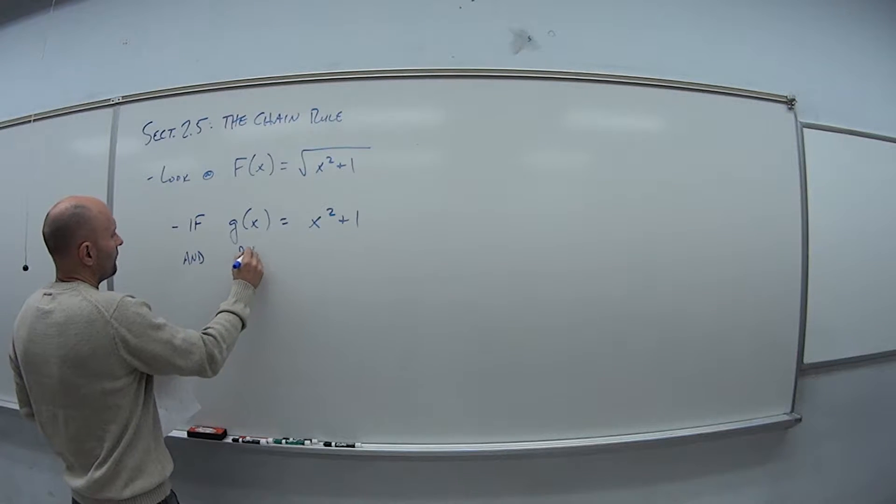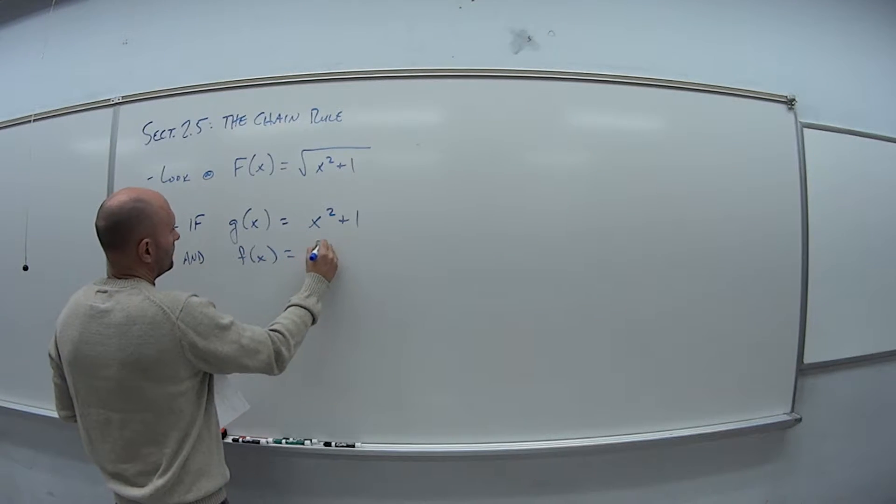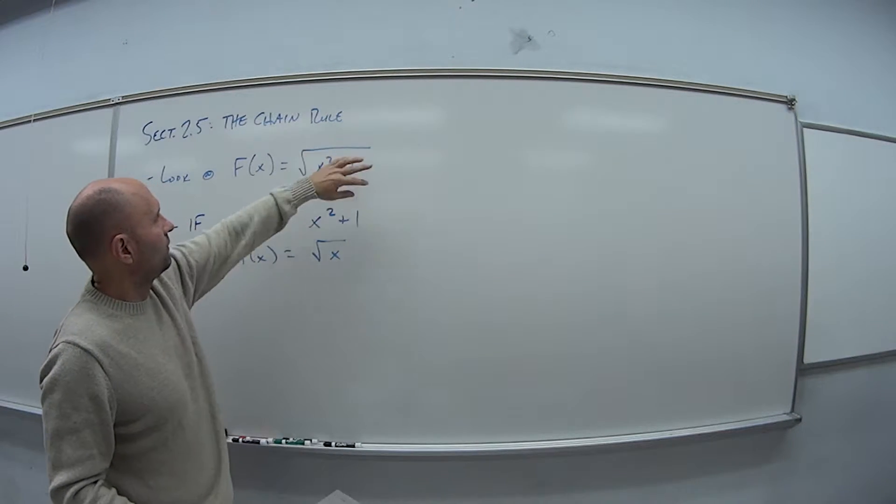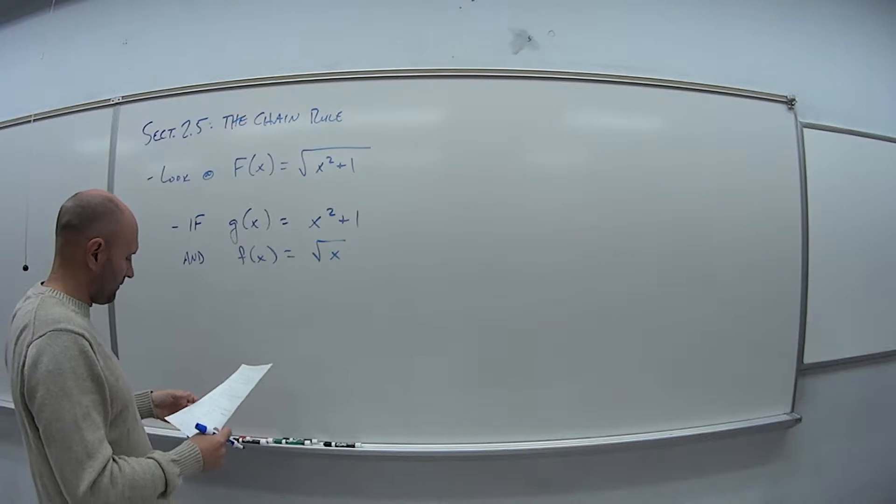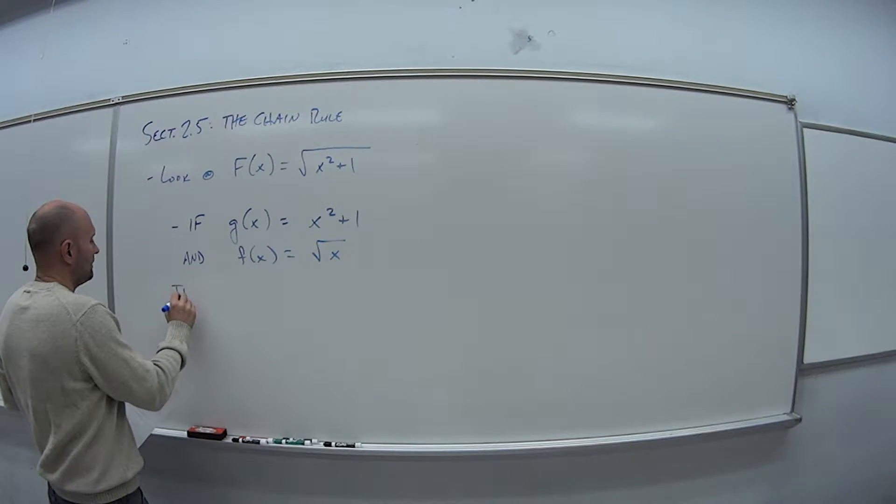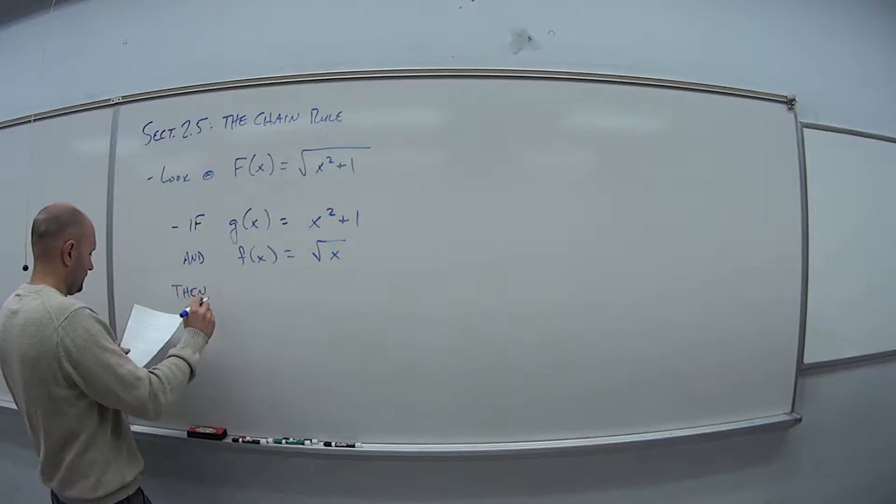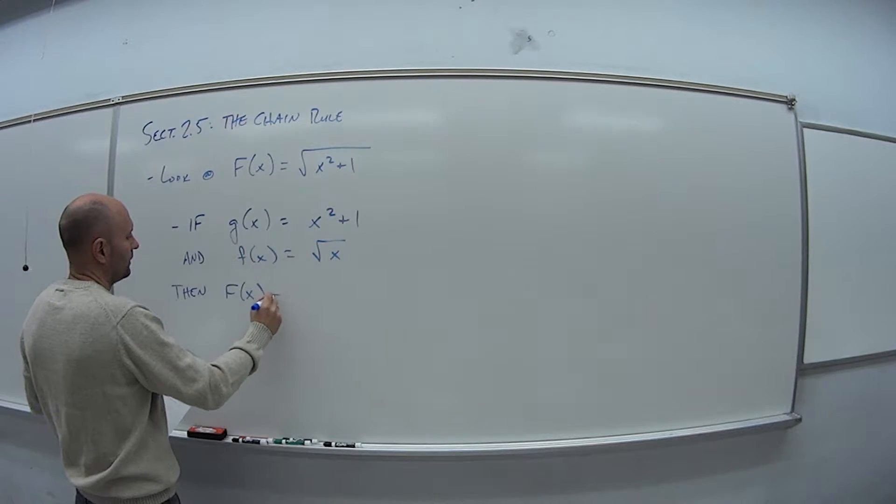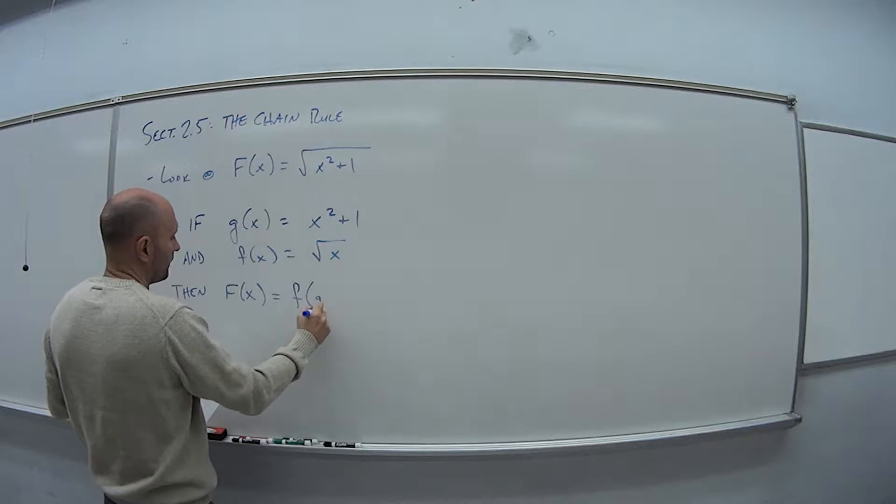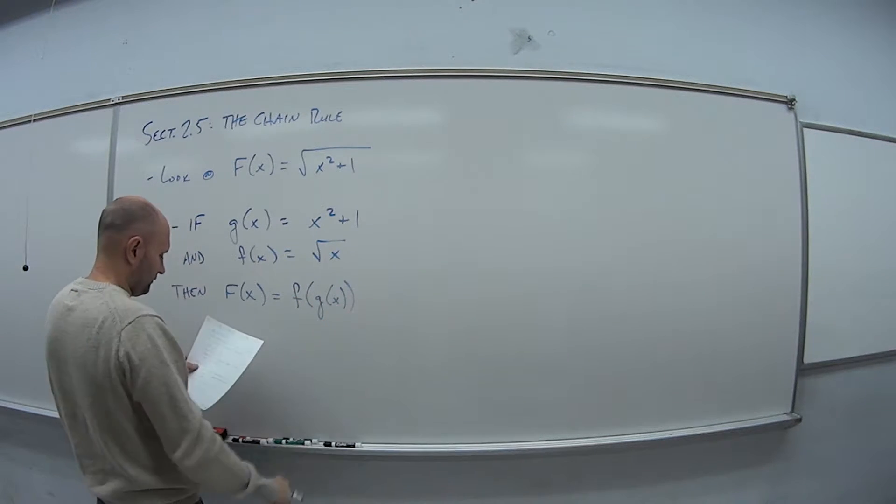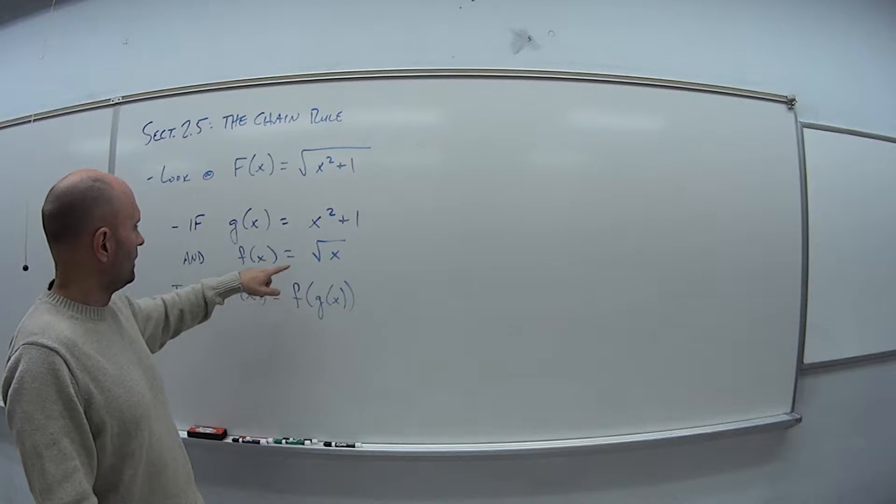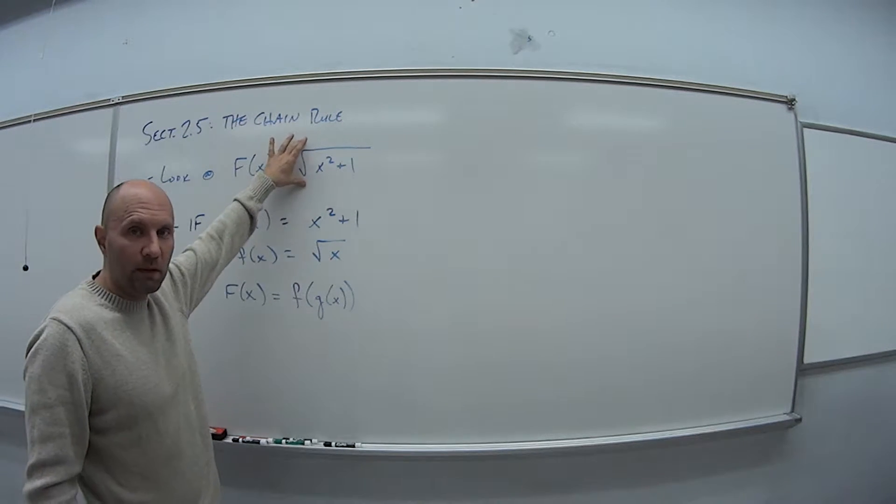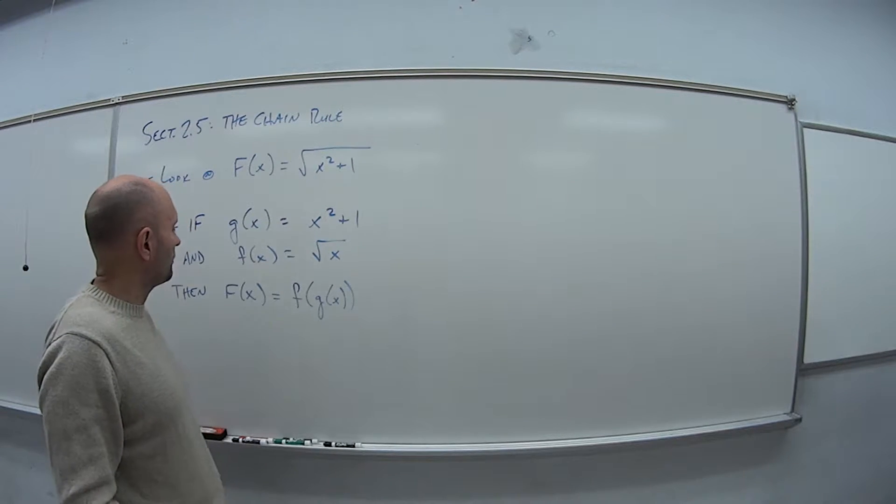And if we say f of x is just the square root of x, so whatever is underneath here take the square root of it, that gives us our f function. Then we can say that this function, big F of x, is just a composite function f of g of x. So take g of x, plug it into f of x, and that gives us the big F of x that we had started with.